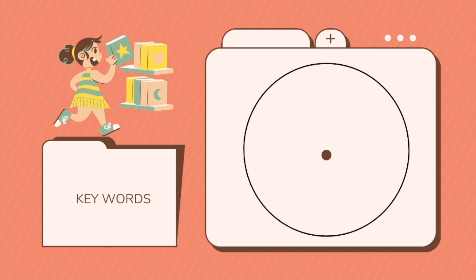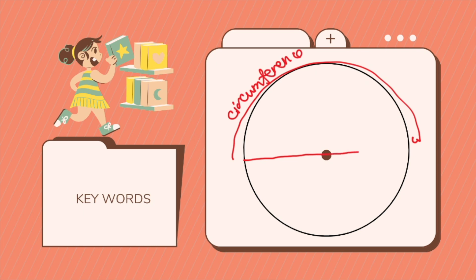The first one is what we call our circumference. Our circumference is the distance around the circle — this is its perimeter. The next one is your diameter. Diameter is the distance across the circle which passes through the center, from one point to another point of your circumference passing through the center, called your diameter.